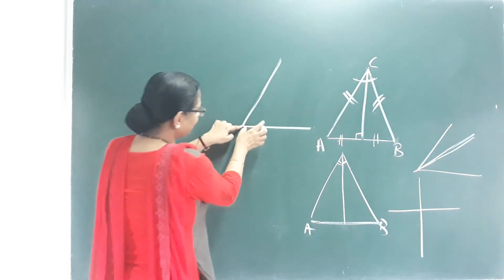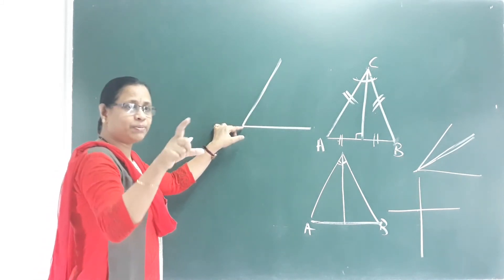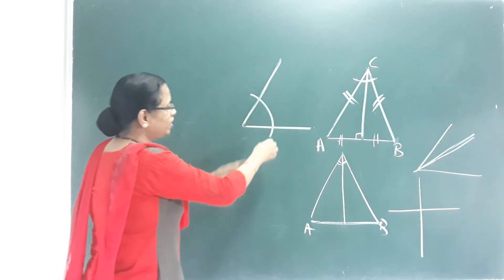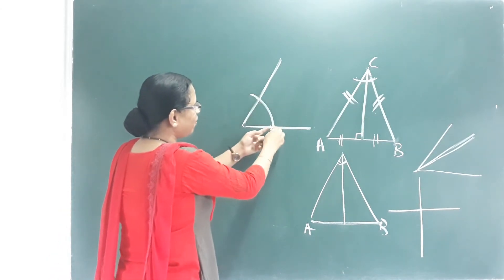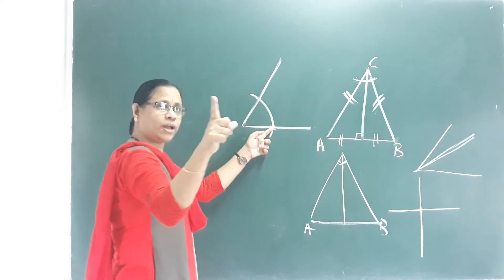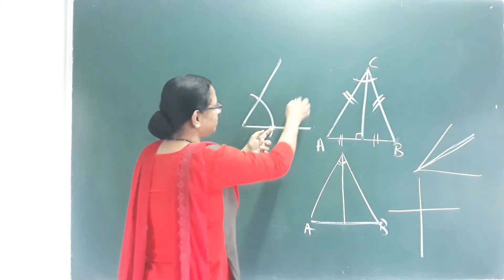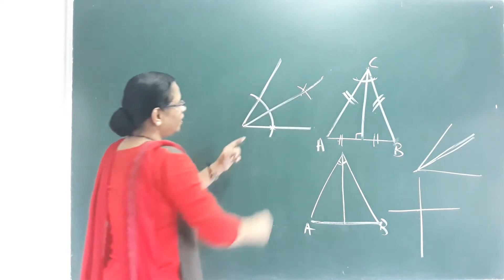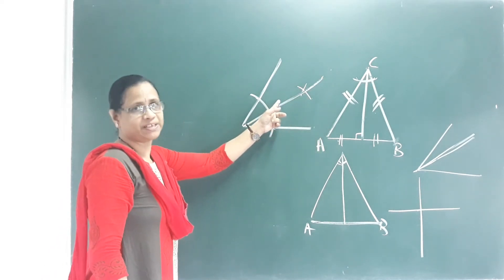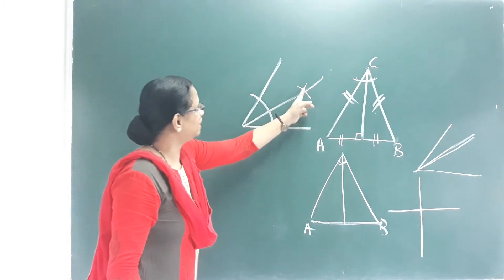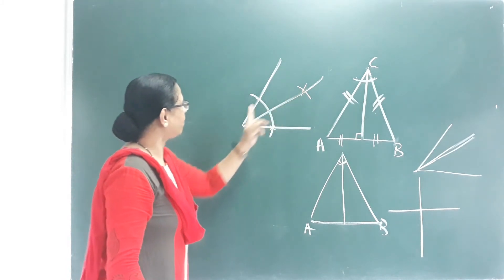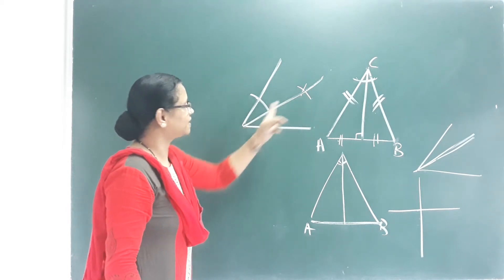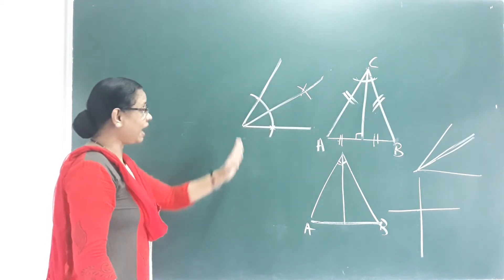Where is the angle bisector? Here is a compass. Here is an arc — that arc is like this. Then the arc is like this. If you cut this point, we don't have to measure it. This point is intersecting both. This vertex is also joined. This is the angle bisector.